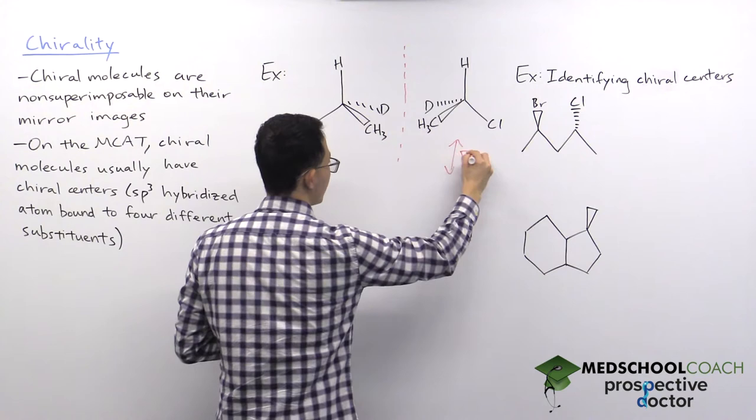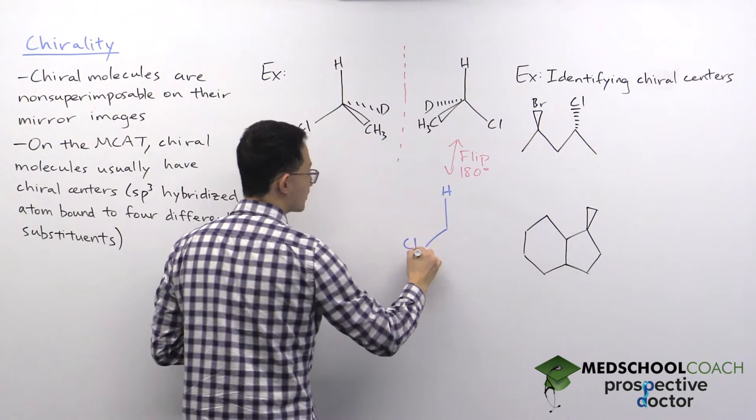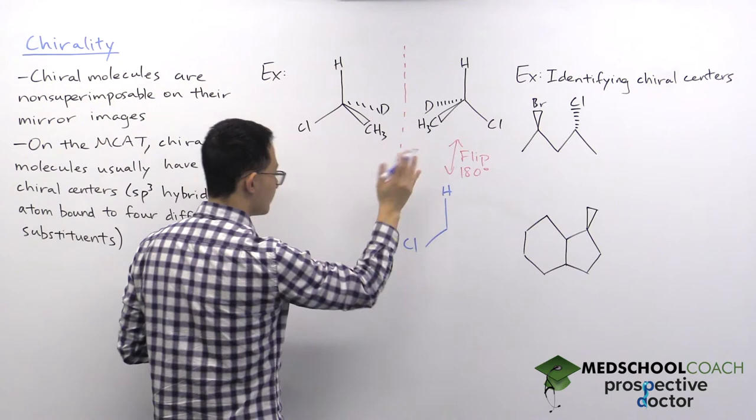So I'm going to flip this by 180 degrees. If I do that, then I can draw the same molecule, but now I'm going to have the hydrogen and the chlorine both facing the left side like its mirror image.